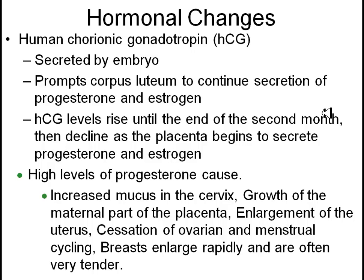Some hormonal changes in the first trimester: once the zygote forms, it begins to produce HCG, or human chorionic gonadotropin. HCG maintains the corpus luteum, which produces progesterone — famously known as the pregnancy hormone. Progesterone closes the cervix, stops the menstrual cycle, and begins the process of pregnancy. It's the embryo itself that's maintaining the pregnancy and keeping the uterine lining from washing away. This continues for roughly the first month or two, after which the placenta takes over producing progesterone.